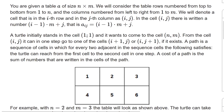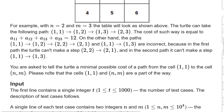A turtle initially stands in cell (1,1) and wants to reach cell (n,m). From cell (i,j) it can in one step go to cell (i+1,j) — moving down — or to cell (i,j+1) — moving right — if those cells exist. A path is a sequence of cells where each adjacent pair satisfies this condition. The cost of a path is the sum of the numbers written in all cells of the path.